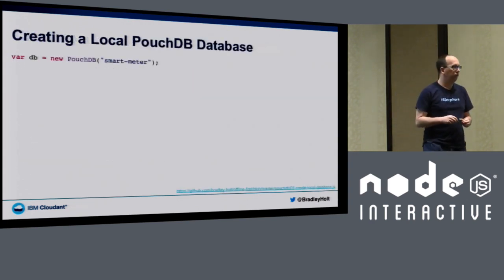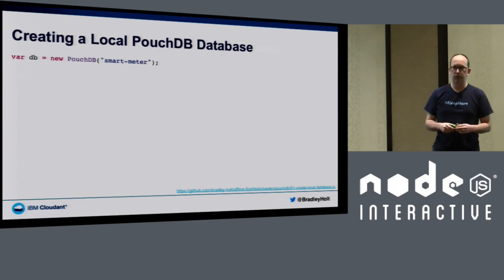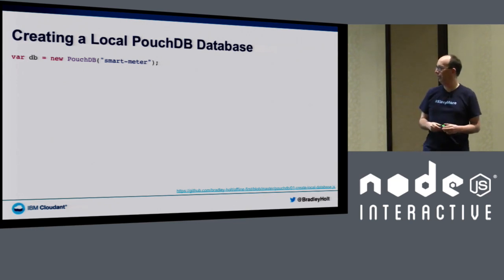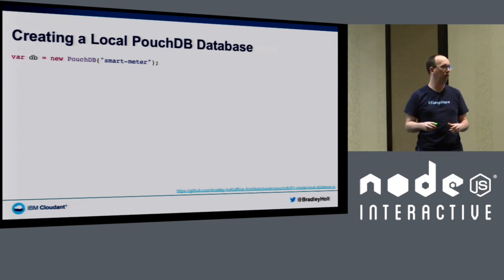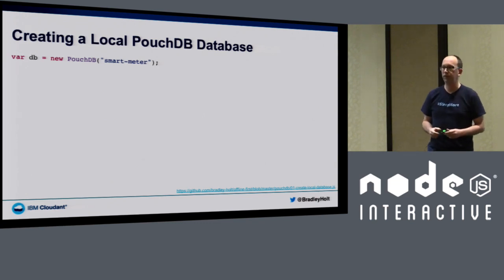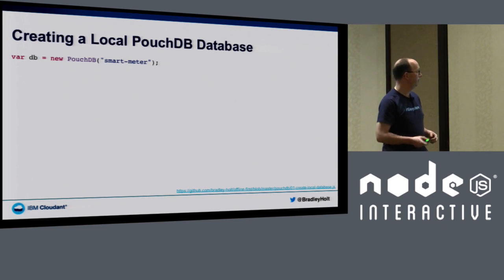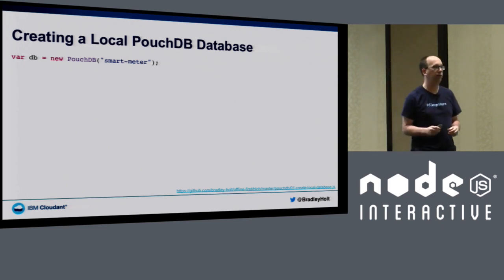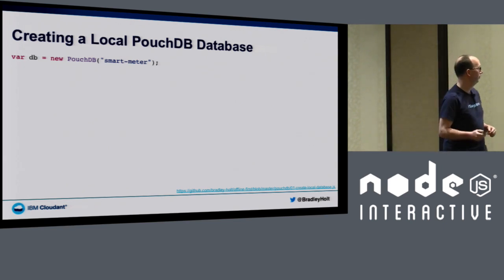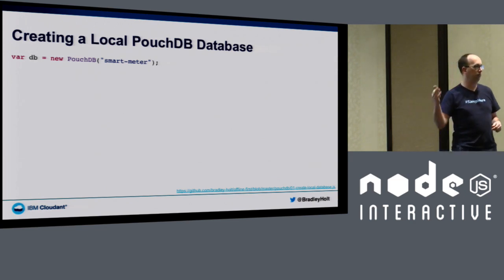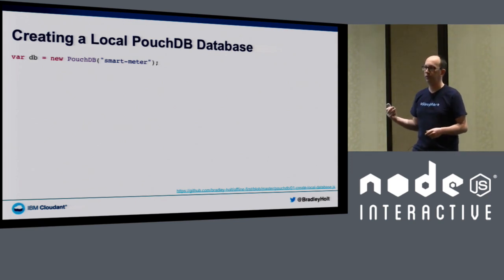Creating a local database with PouchDB is very simple — just one line of code: `var db = new PouchDB('database-name')`. If this database doesn't exist already, it will create it; otherwise it gives you a reference to the existing database. This creates a local database on the device — in a browser, that's using IndexedDB or another form of local storage; in a hybrid mobile app, it could be using WebSQL under the hood.